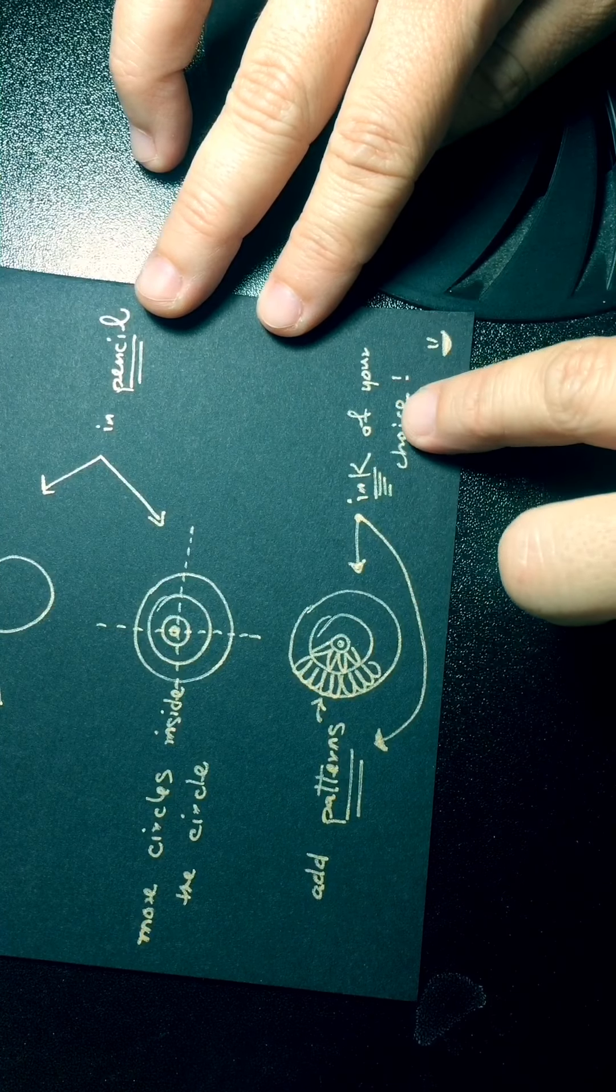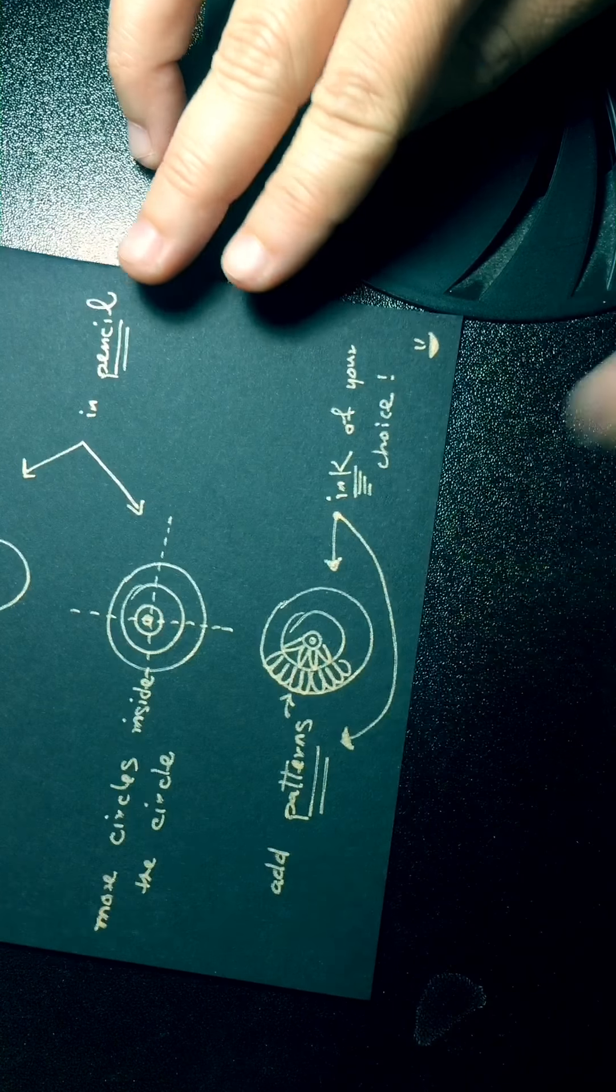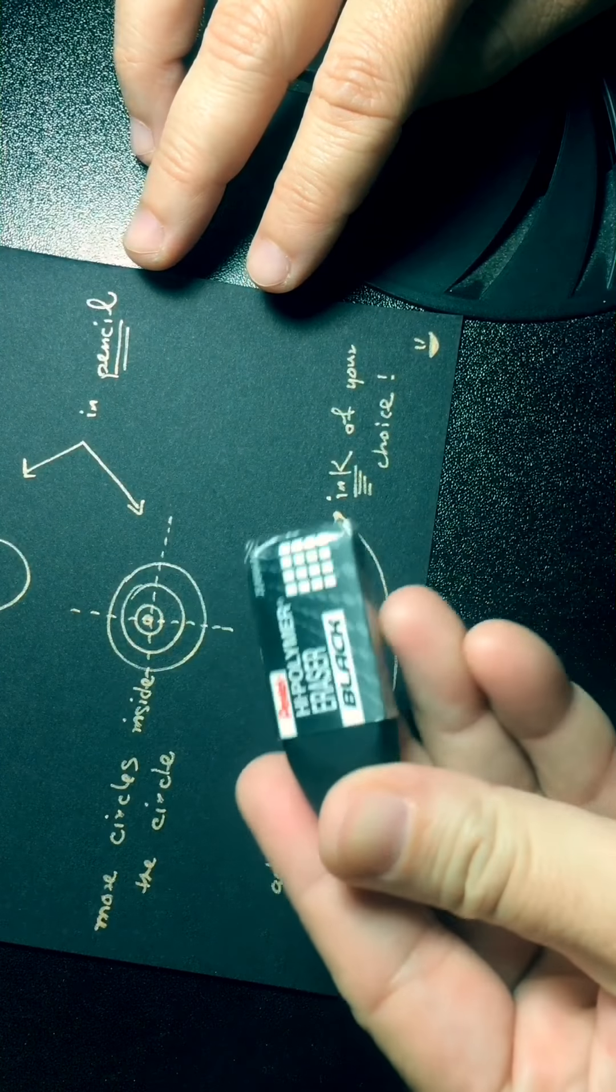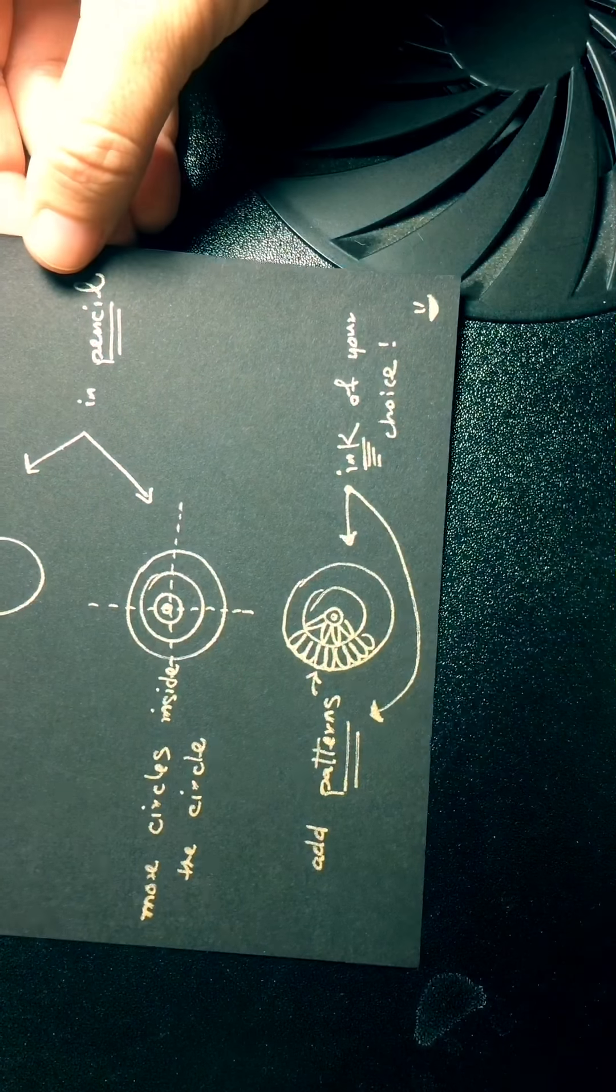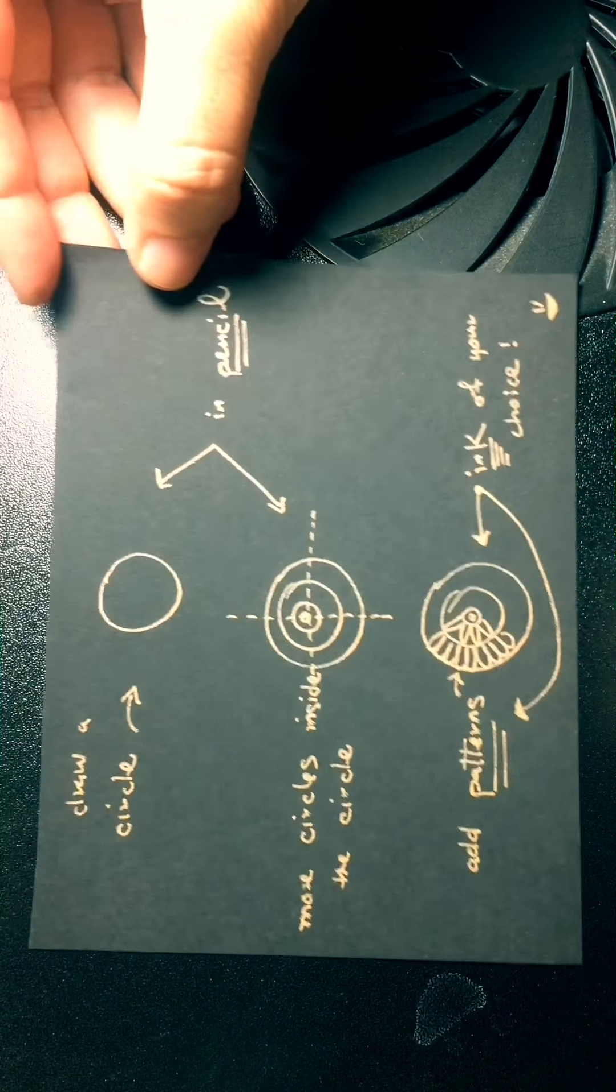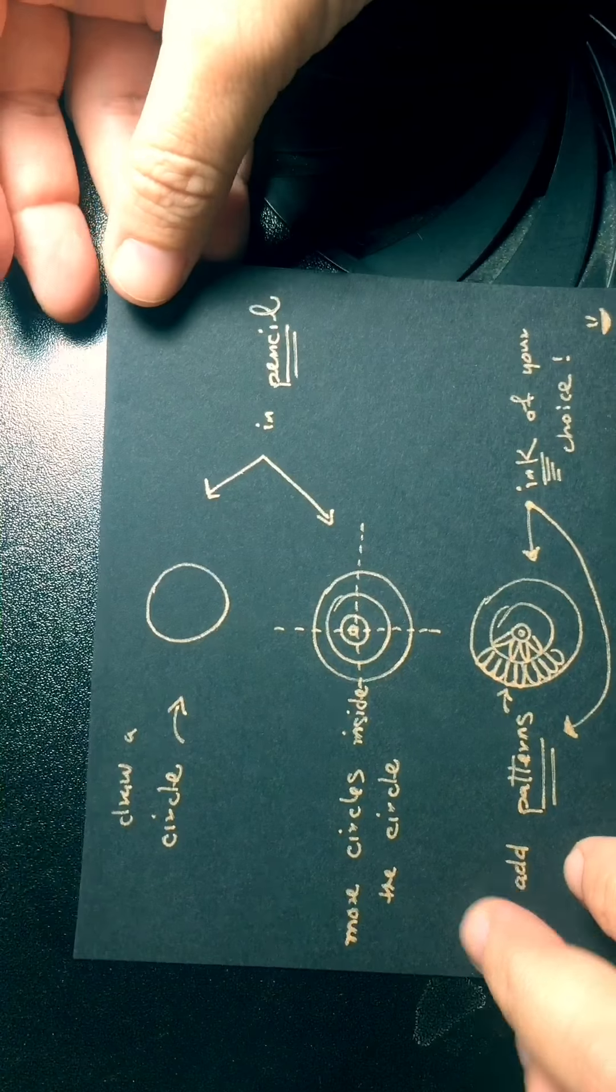Because when you finish, the ink dries, you use the eraser to erase the pencil lines, and then the finished product is going to last, and you can keep it forever.